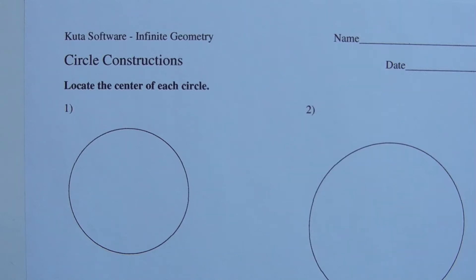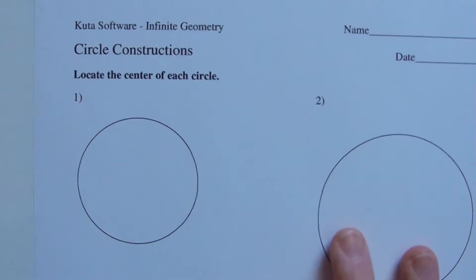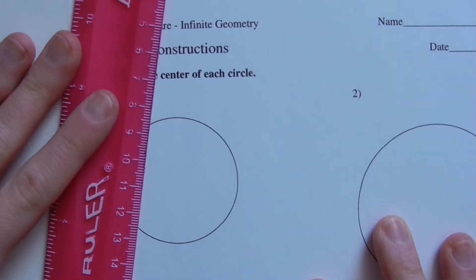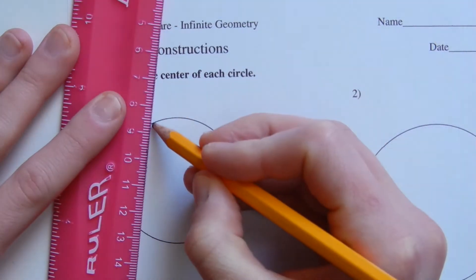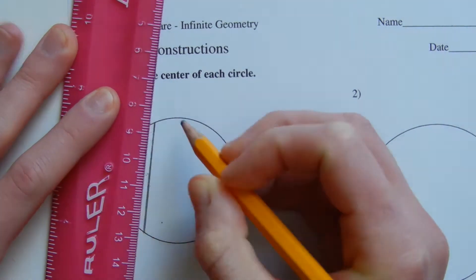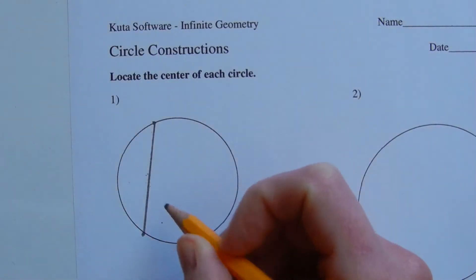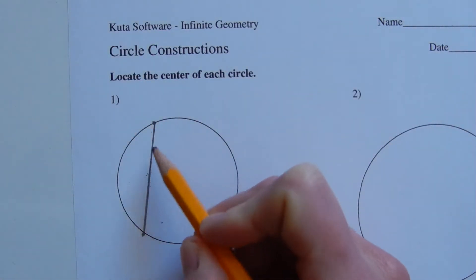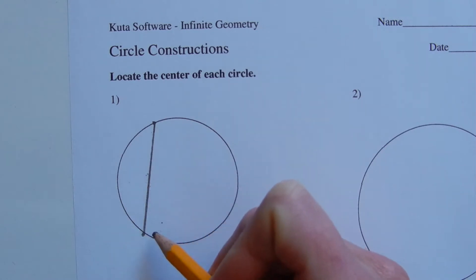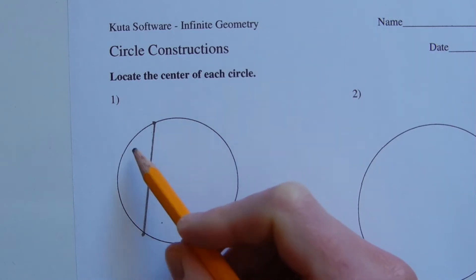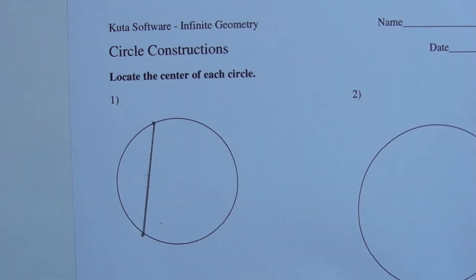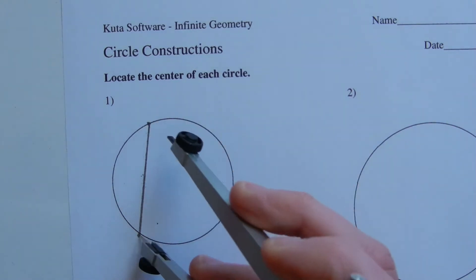In this video we're going to start the CUDA software infinite geometry free worksheet circle constructions in numbers one and two. We're going to be locating the center of each circle. To do that, we're going to start with our straight edge and make a chord along the circle. Our next step is to draw the perpendicular bisector of that chord, and in doing so we will cut the circle in half.